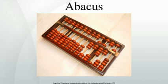The period 2700–2300 BC saw the first appearance of the Sumerian abacus, a table of successive columns which delimited the successive orders of magnitude of their sexagesimal number system. Some scholars point to a character from the Babylonian cuneiform which may have been derived from a representation of the abacus. It is the belief of Old Babylonian scholars such as Carruccio that Old Babylonians may have used the abacus for the operations of addition and subtraction. However, this primitive device proved difficult to use for more complex calculations.